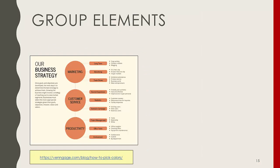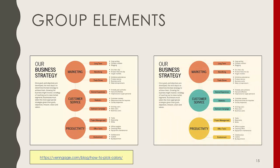The second purpose of colors is to group elements. In an example with three categories, each with its own three subcategories and bullet points, it can be difficult to differentiate among the groups. Once we color each category with a different color, it becomes much easier to tell which subcategories belong to marketing, which go with customer service, and which belong to productivity.